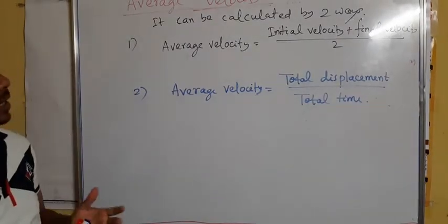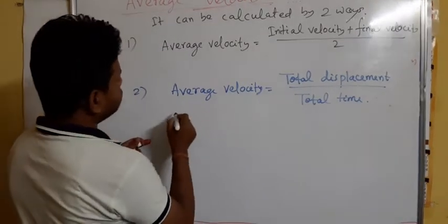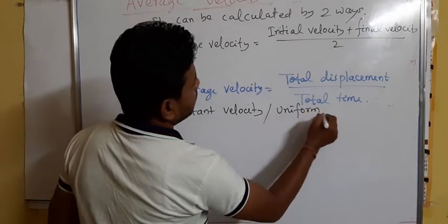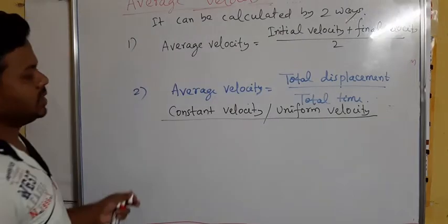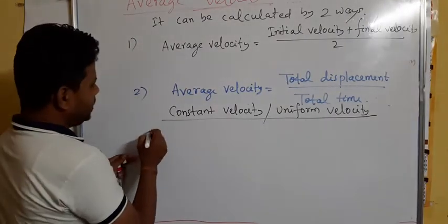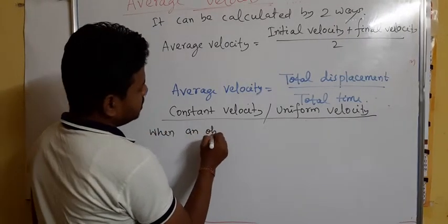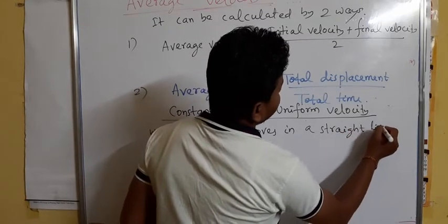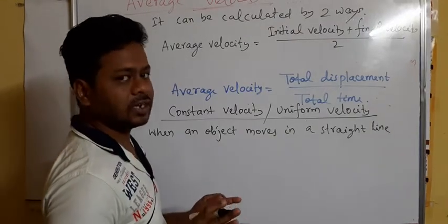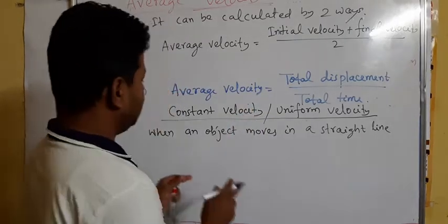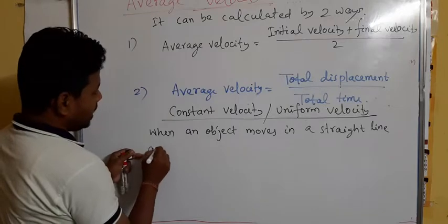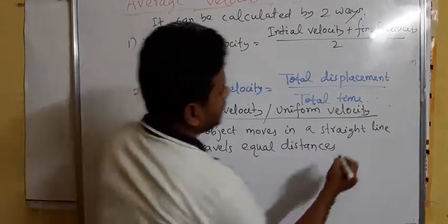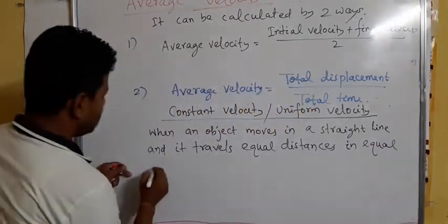This is all about average velocity. Another term — the last one — is constant velocity, also called uniform velocity. What is constant velocity? The velocity remains constant. What happens is when an object moves in a straight line, its direction does not change — it remains constant. The direction should be the same.